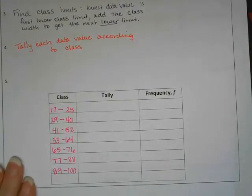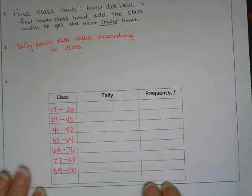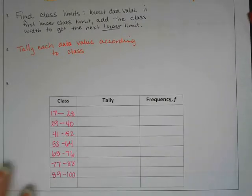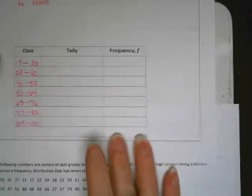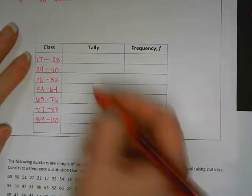Which works out nice anyway because it's hard. We're doing great. Alright, so now we are going to tally each data value according to class. This is when we start to put our data in again. So I have a 60, 60 window here.